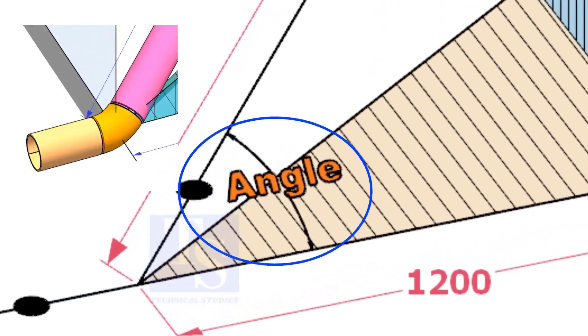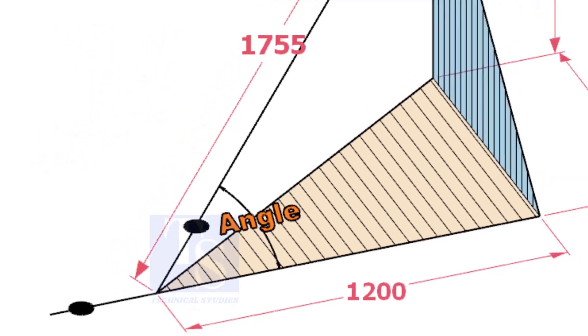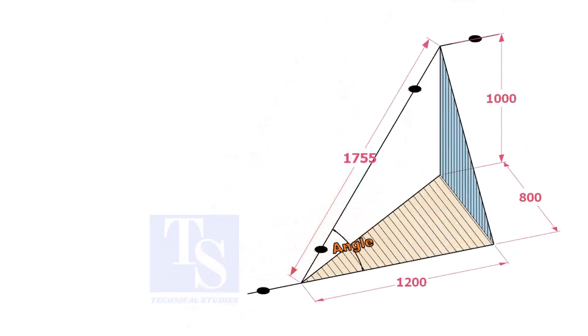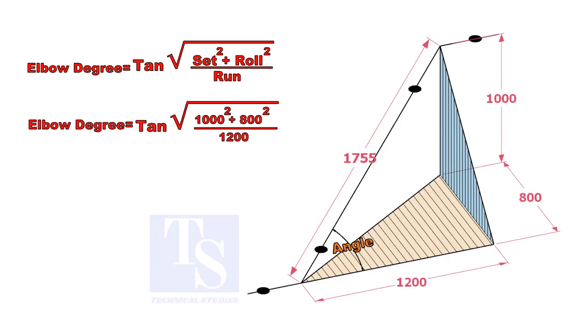Let us calculate the degree of the elbow or the including angle. The formula is the root of the set and the roll divided by run into tan.